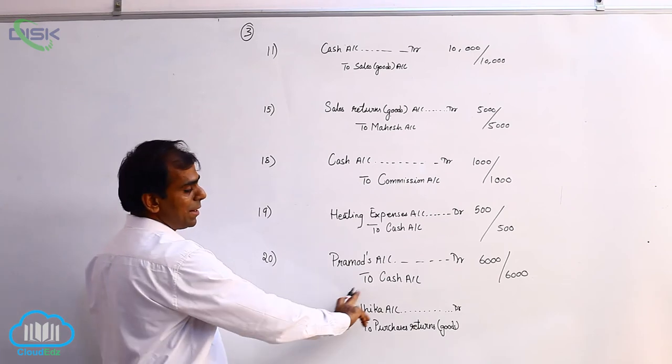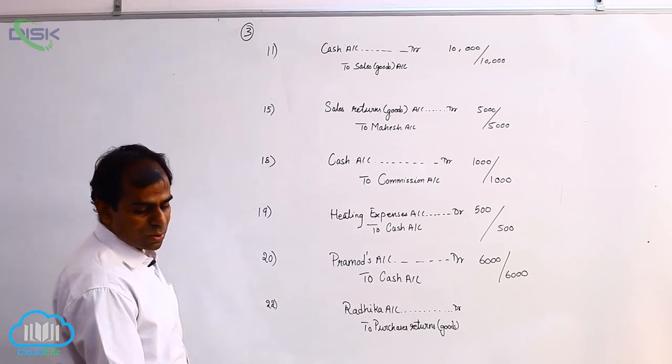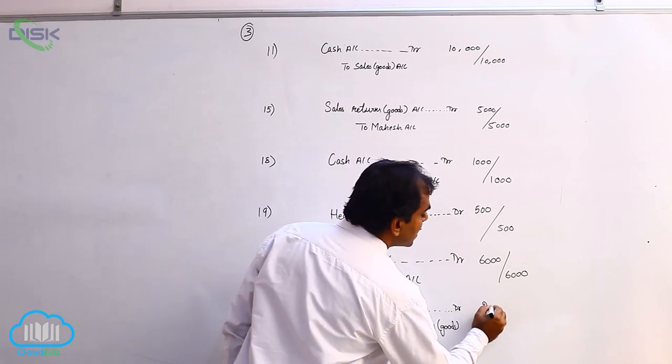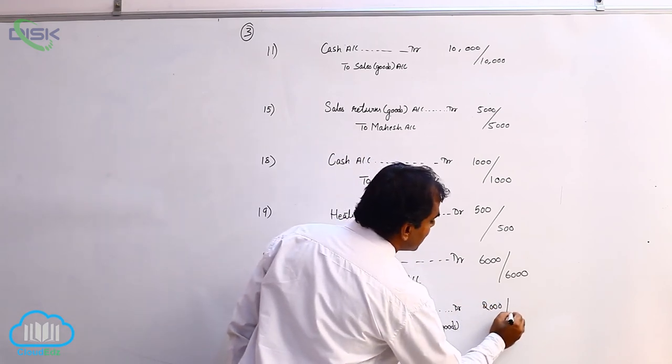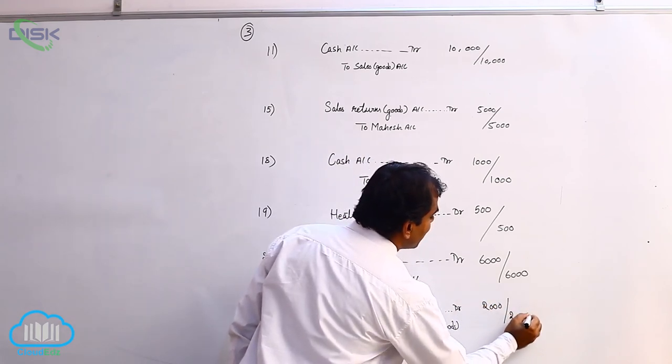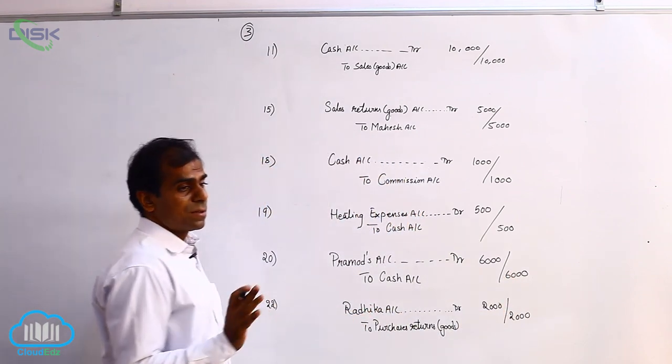So the journal entry being Radhika account debit to purchase returns account, and the amount is 2000. Your narration could be being purchase returns to Radhika.